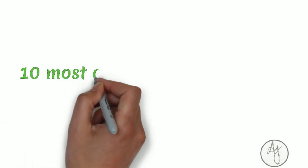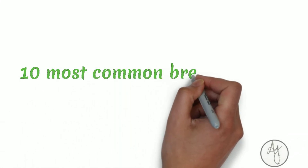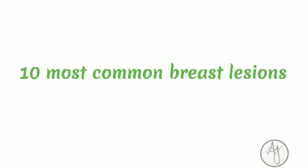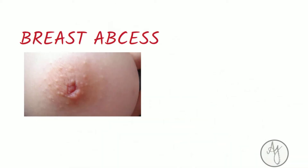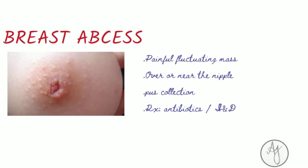Hey guys, for today's quick video we're going to talk about the 10 most common breast lesions and how to differentiate them based on their clinical features. If there is a painful fluctuating mass over the breast or near the nipple, it is a nipple abscess or a pus collection around the breast. The main treatment is antibiotics and sometimes drainage.